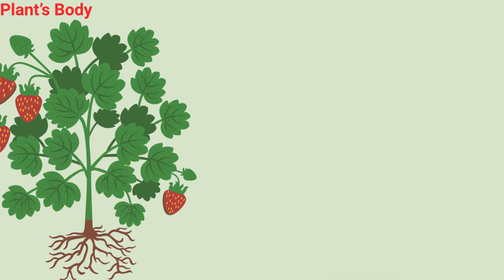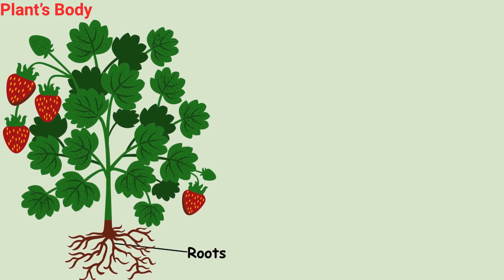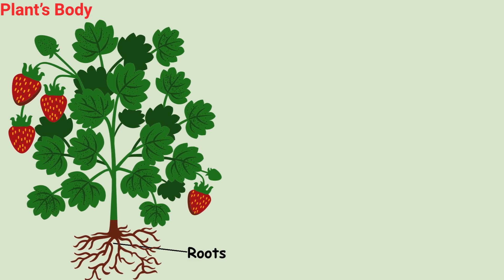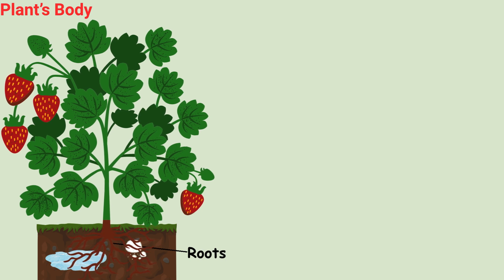Let's see. Parts of a plant. Roots. Underground helpers. Roots hold the plant in the soil and drink water and minerals from the ground.